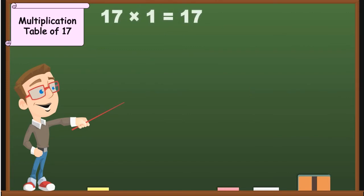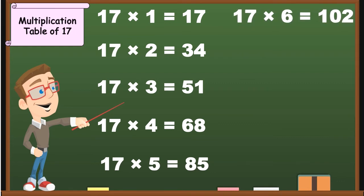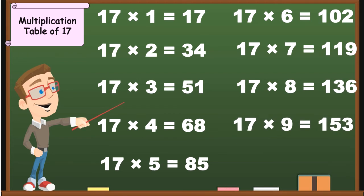17 1's are 17, 17 2's are 34, 17 3's are 51, 17 4's are 68, 17 5's are 85, 17 6's are 102, 17 7's are 119, 17 8's are 136, 17 9's are 153, 17 10's are 170.